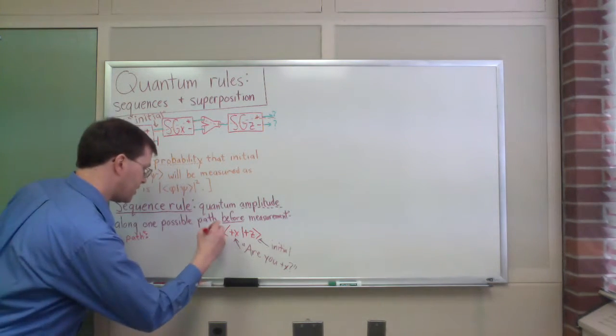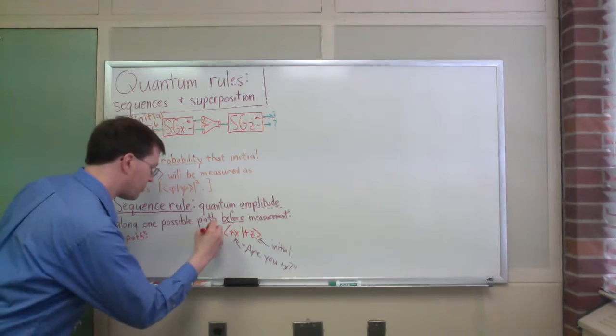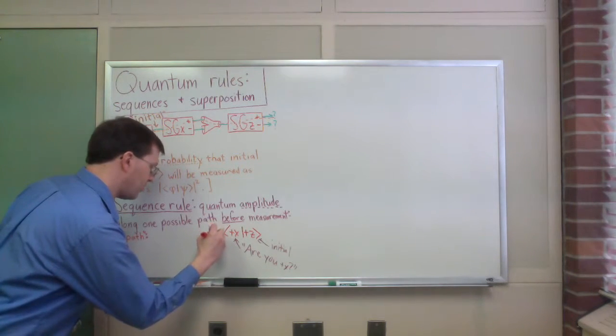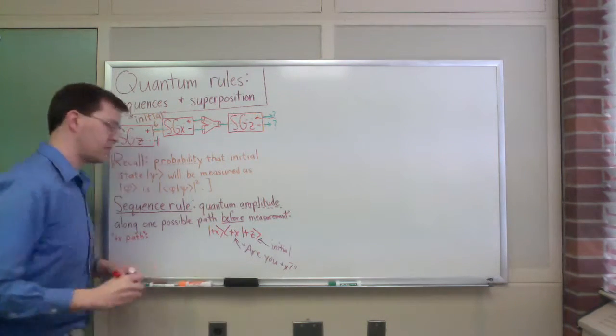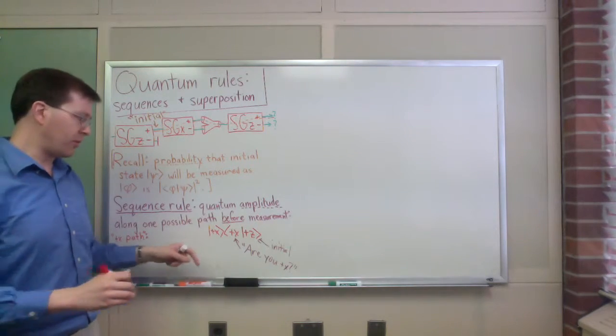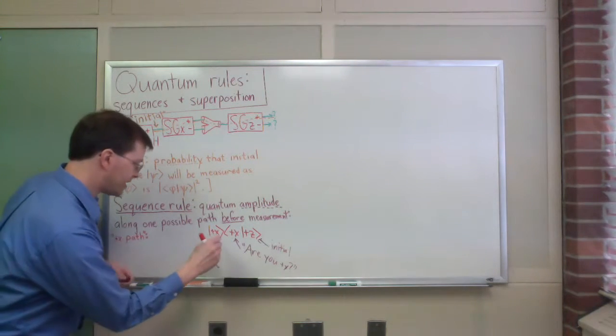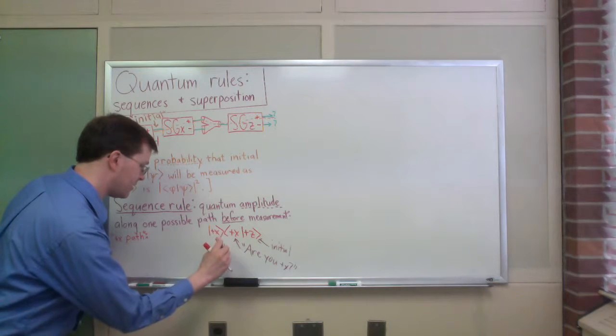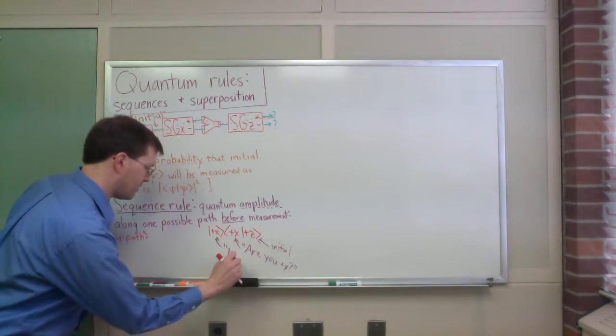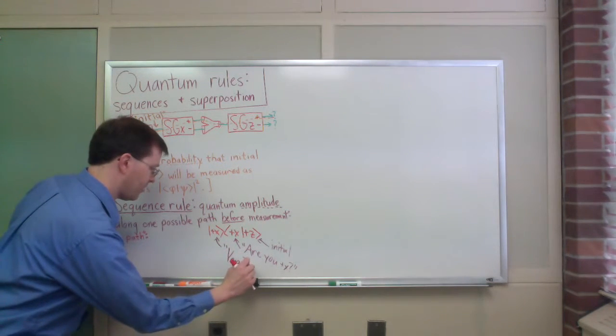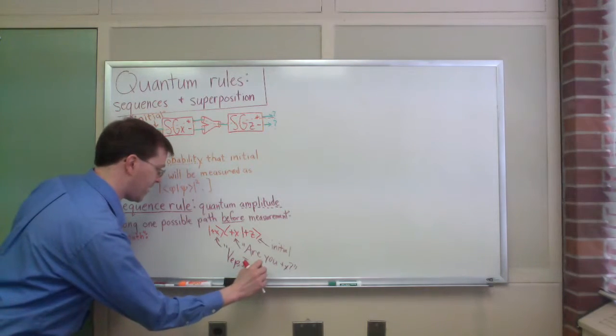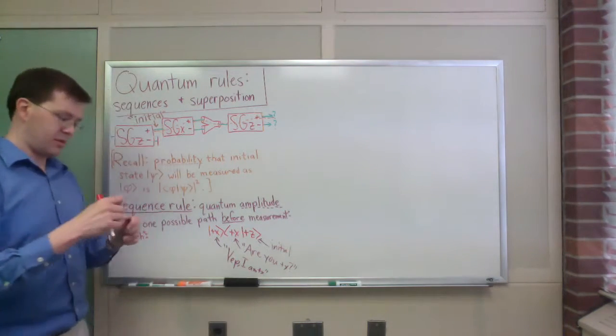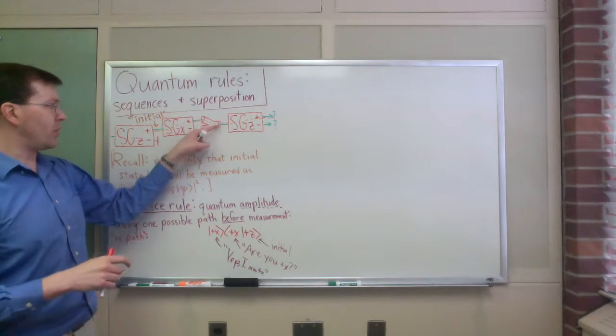I'm in the plus x state. So I'm going to put the ket vector for plus x as the next piece of my amplitude. Remember, I asked the question, so this then says, yep, I am plus x. So that's what this ket vector says, and we follow that along,